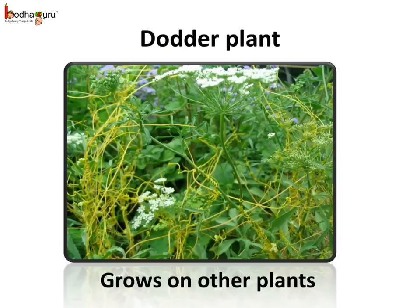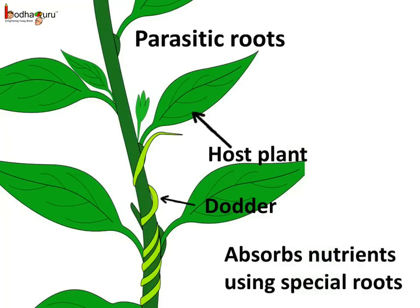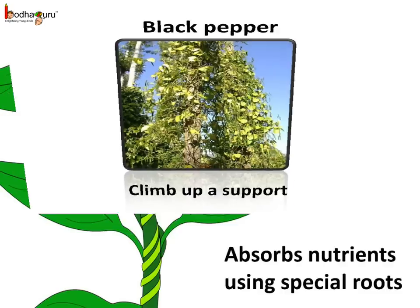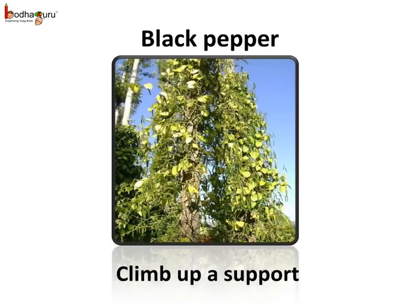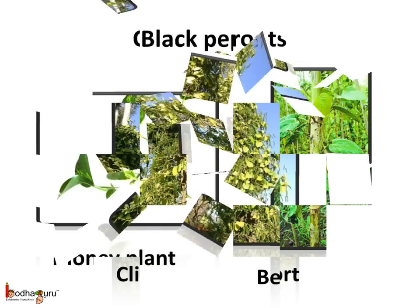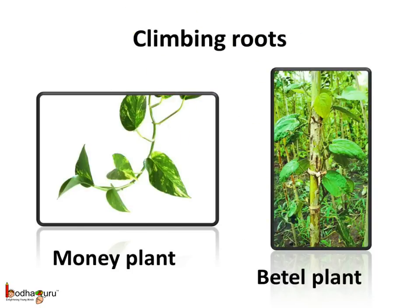A few plants, like this dodder plant, grow on other plants. The dodder plant absorbs the nutrients from the host plant using a special type of roots which grow from their stem. These are called parasitic roots. Some plants, like this black pepper plant, have climbing roots. These roots help the plants to climb up a support, which can be a tree, wall, etc. Even the money plant and the betel plant have climbing roots.